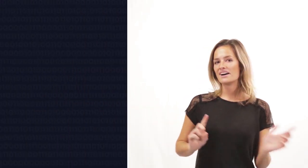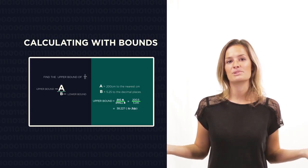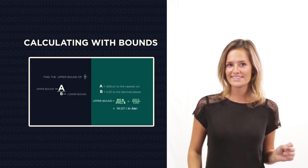So there we have bounds. Just remember to half the degree of accuracy and you'll have no problems. In part two we're going to look at how to calculate the bounds to get either the biggest possible or smallest possible answers.